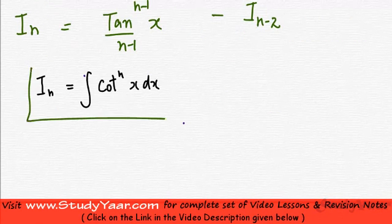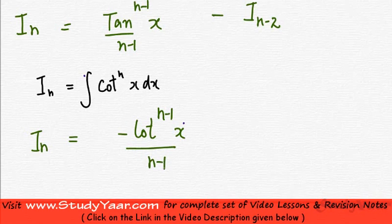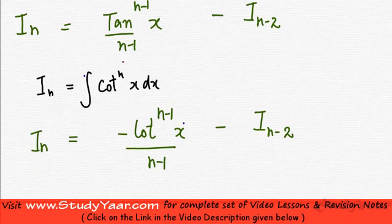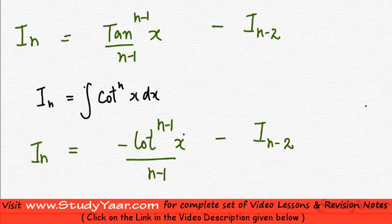Similarly, if you solve for the integral of cot^n(x) dx, you get I_n = minus cot^(n-1)(x)/(n-1) minus I_(n-2). So the reduction formula for cot^n(x) dx has a minus sign instead of a plus, compared to the tan formula.